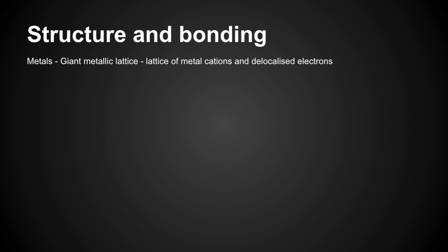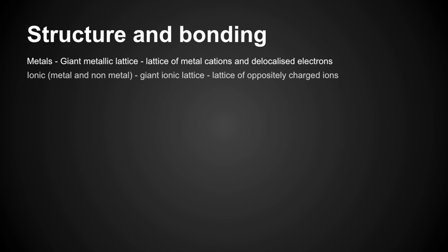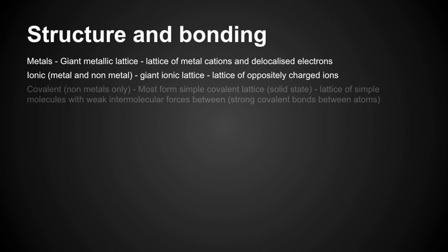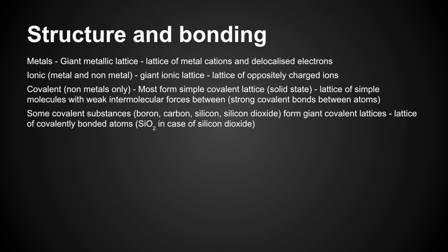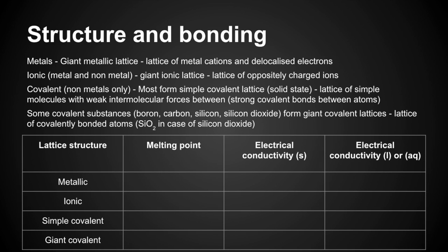Starting with structure and bonding. Metals have a giant metallic lattice — a lattice of metal cations and delocalised electrons. Ionic substances (metal and non-metal) have a giant ionic lattice of oppositely charged ions. Covalent substances (non-metals only) mostly form simple covalent lattices in the solid state — a lattice of simple molecules with weak intermolecular forces between them, but strong covalent bonds between the atoms.